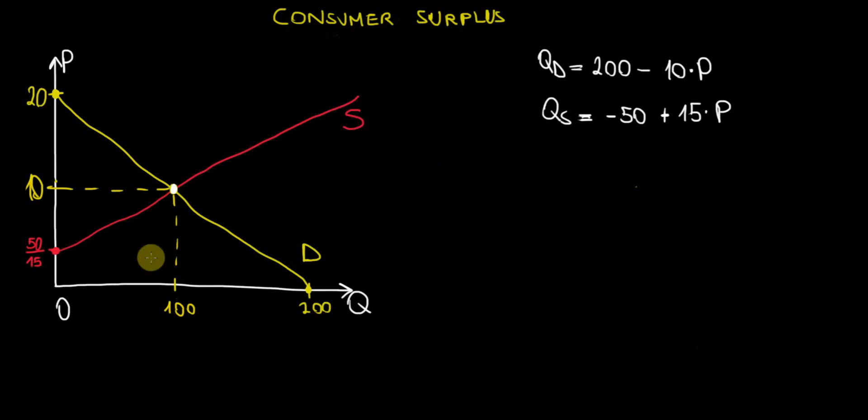If you notice I still have the same graph that I had in the previous video where we calculated the market equilibrium. For the sake of this video I erased that computation because it's unnecessary for now, but we're still applying it to the same example. We're still using the same equilibrium quantity and price in order to do the computations for the consumer surplus.